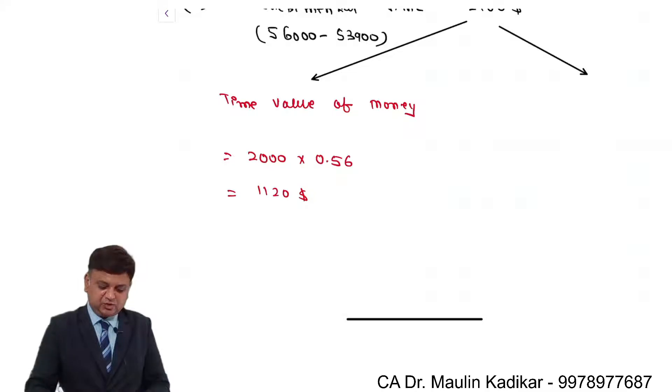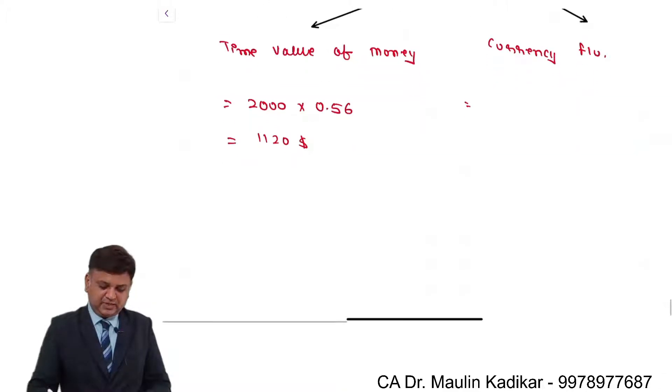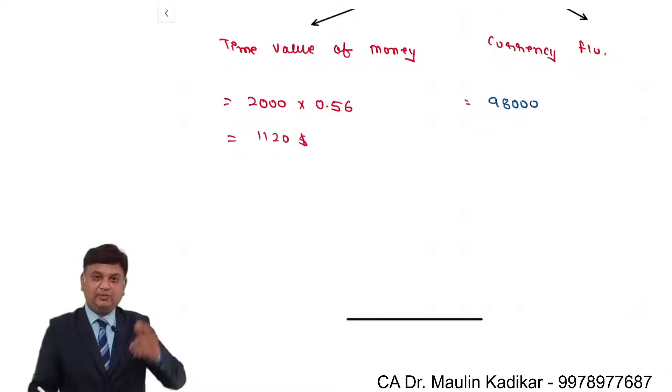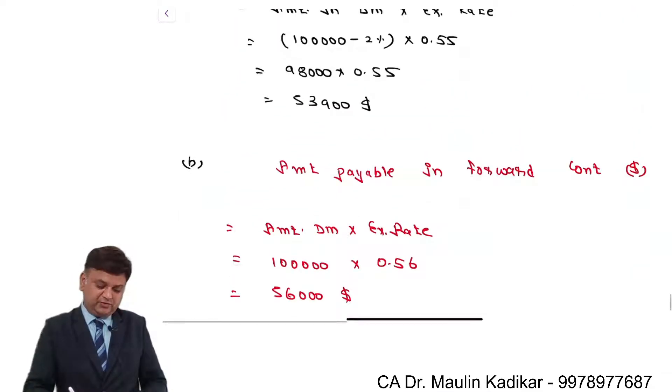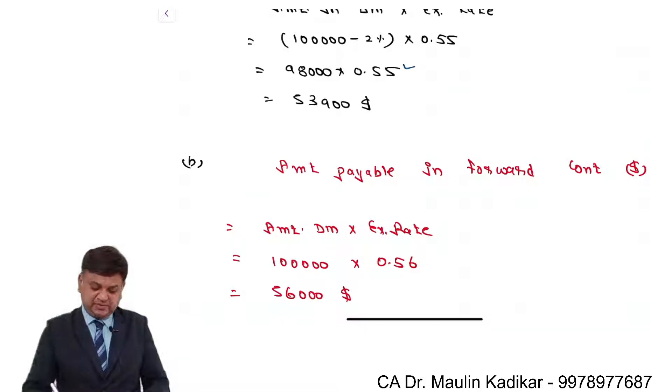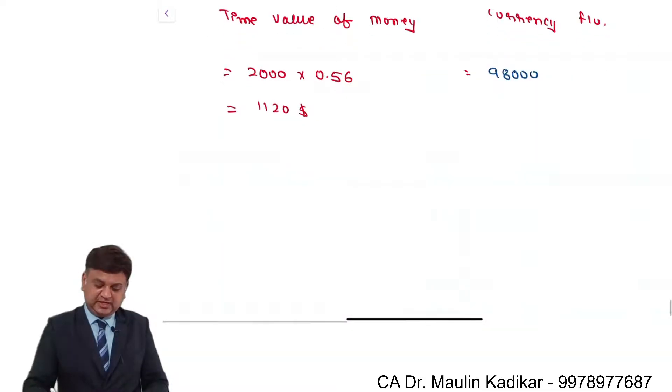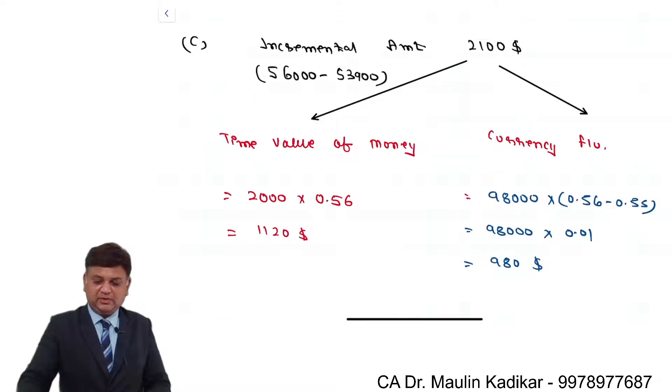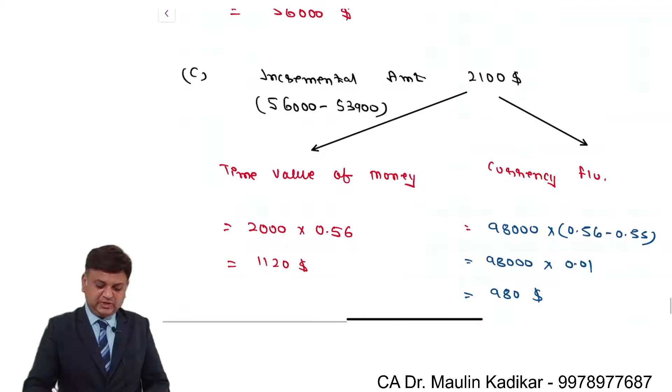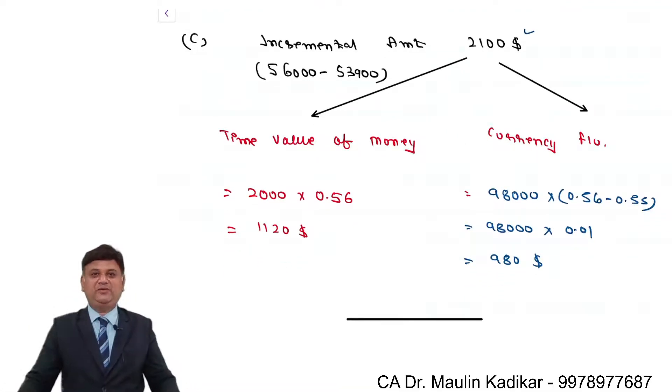And currency fluctuation. In that case it is 98,000 - that is the common payment. Because the 98,000 Dutchmark which I was able to purchase at 0.55, now the same is required to be purchased at 0.56. So 98,000 into 0.56 minus 0.55. So 98,000 into 0.01. So it is 980 dollar. So 2120 plus 980 - that comes to exactly 2100 dollar. This is the way we are required to bifurcate it.